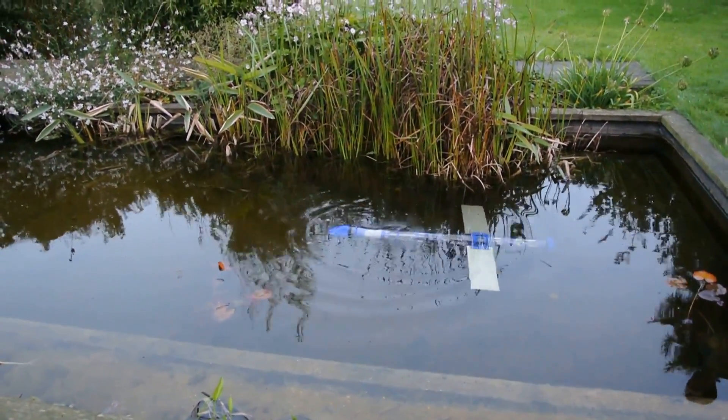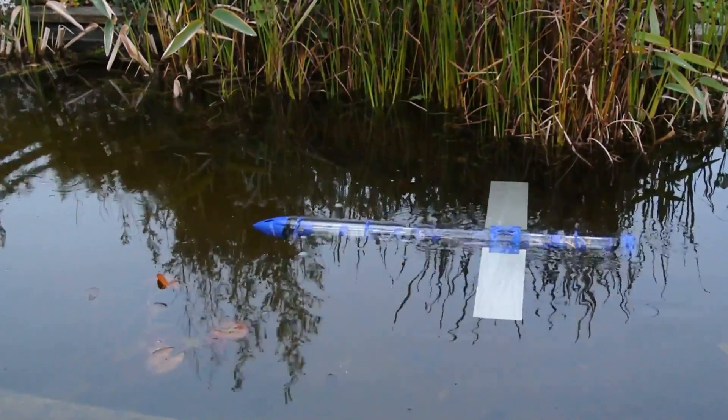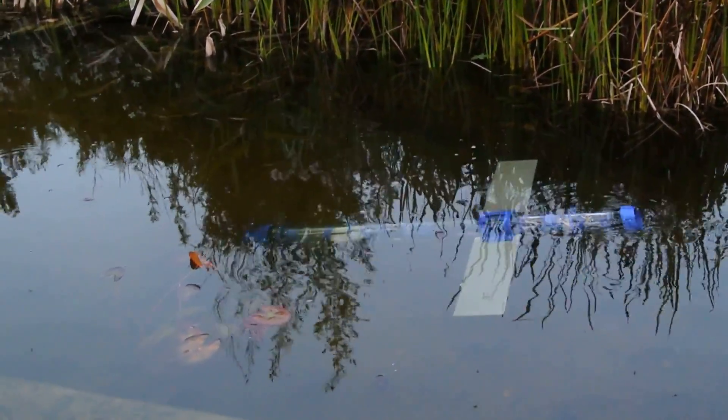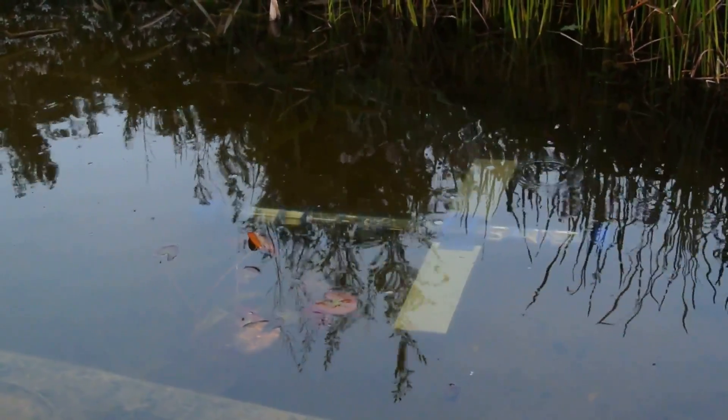As underwater gliders move relatively slowly through the water, there is little disturbance to their surroundings, making them ideal for monitoring underwater conditions. Currently, there is only the sensor at the back which can be used to monitor depth and temperature.